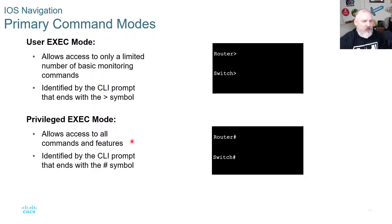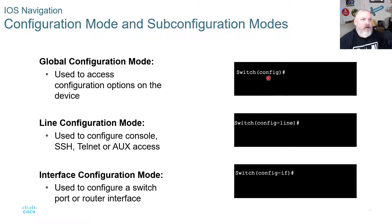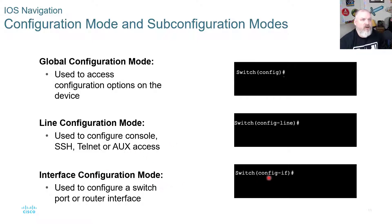Global Configuration mode also shows the pound sign and is used to access configuration options on the device — you'll see 'Switch(config)#'. Line Configuration mode shows 'config-line' and is used to configure console, SSH, Telnet, and auxiliary access. Interface Configuration mode shows 'config-if' and is used to configure a switch port or router interface — the terms 'port' and 'interface' are used interchangeably.